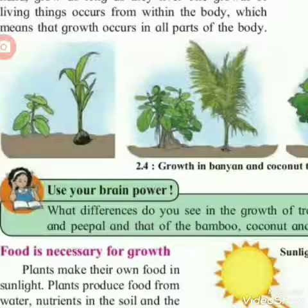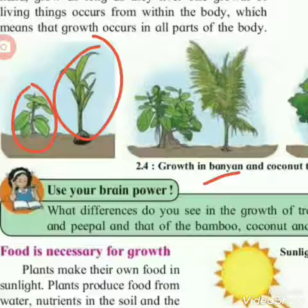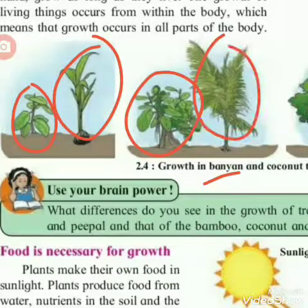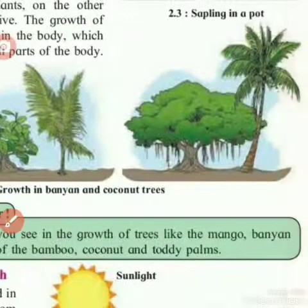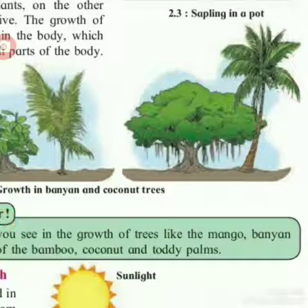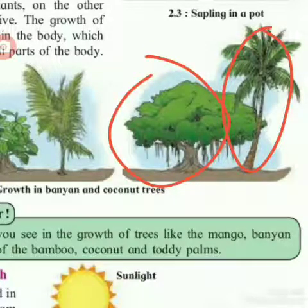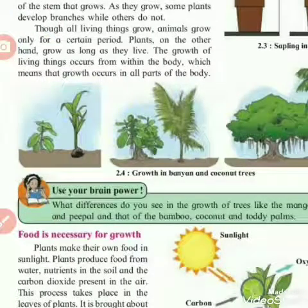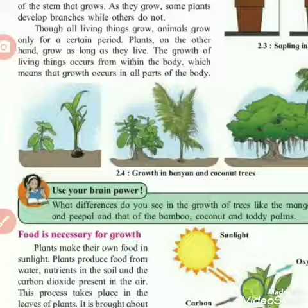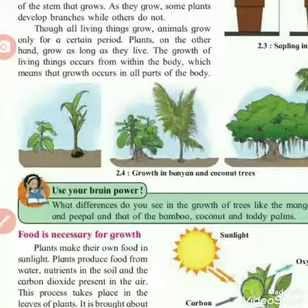Here they have shown a banyan tree and a coconut tree. You can see a sapling of the coconut tree — both increase in height. According to the environment, plants grow differently. Snowy region plants are different from desert region plants — the environment determines the growth of plants.